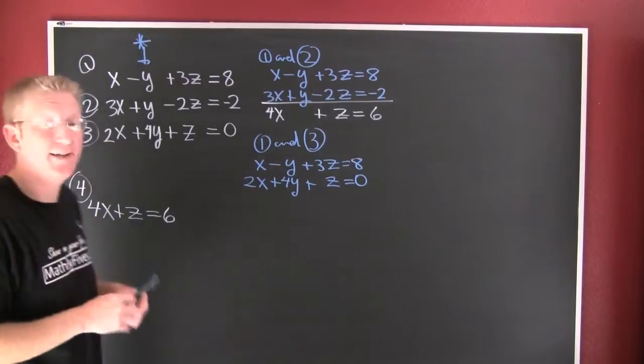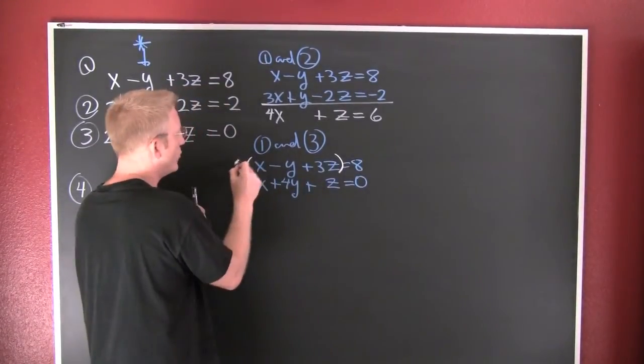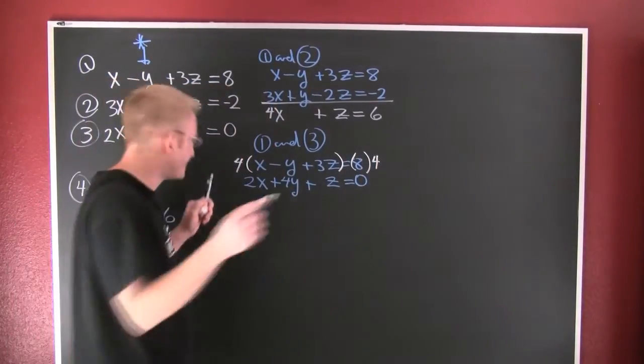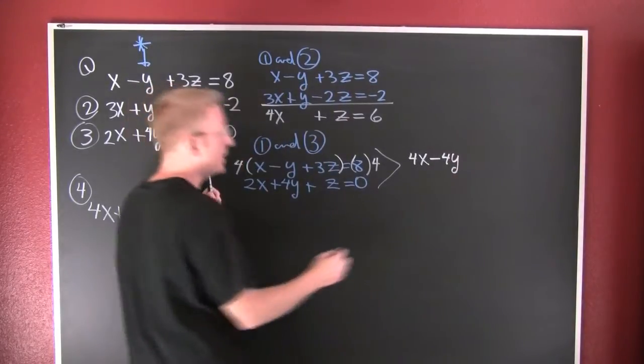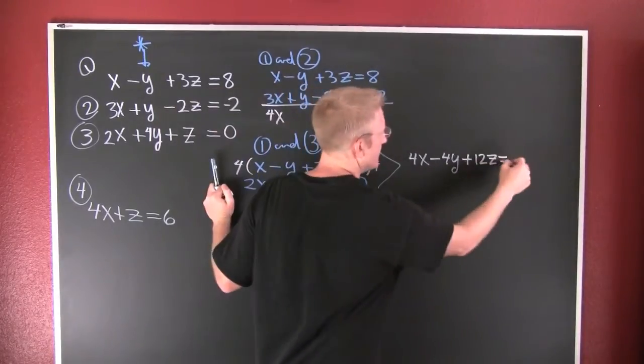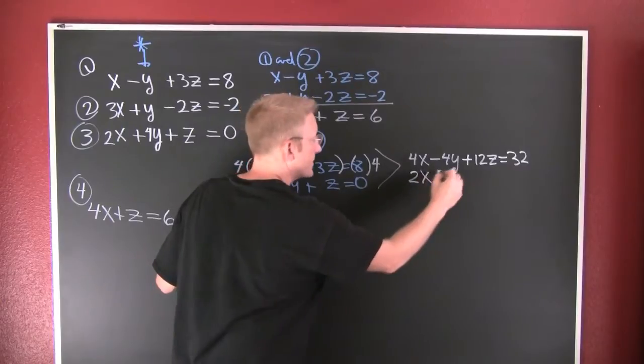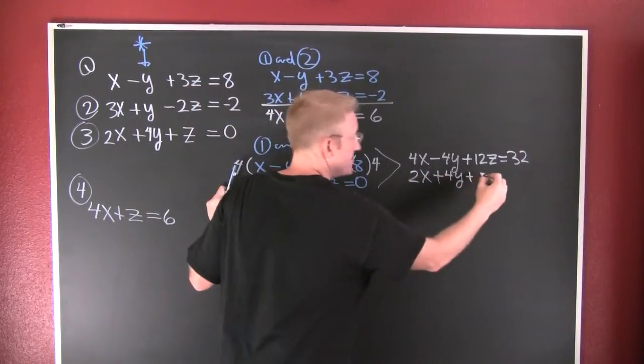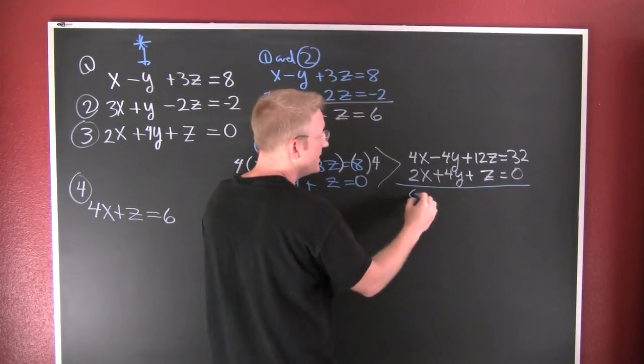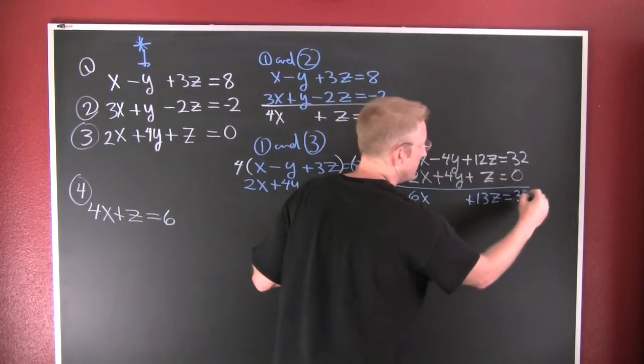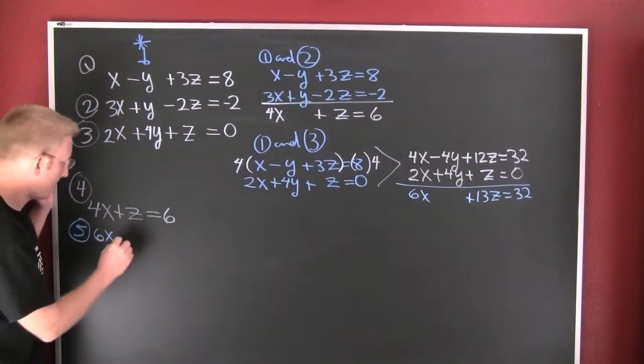But wait, there's more. I want to also perform the elimination of Y in this pairing. I need to get additive inverses, that means I need to multiply the top one by 4. What you do on one side you must also do to the other. So then I have 4X minus 4Y plus 12Z equals 32. Then I don't need to do anything to the bottom because I already have additive inverse of Y, so this is 2X plus 4Y plus Z equals 0. Now that I have the additive inverses, it's time to add them. 4X and 2X is 6X plus 13Z equals 32. So we've eliminated Y and I'm gonna put that down here. This is equation five: 6X plus 13Z equals 32.